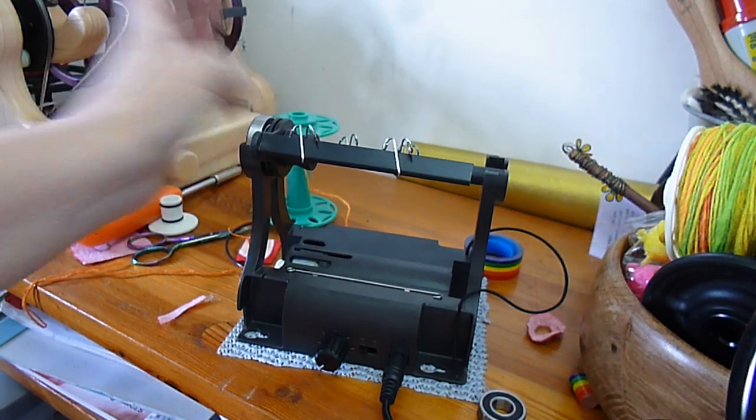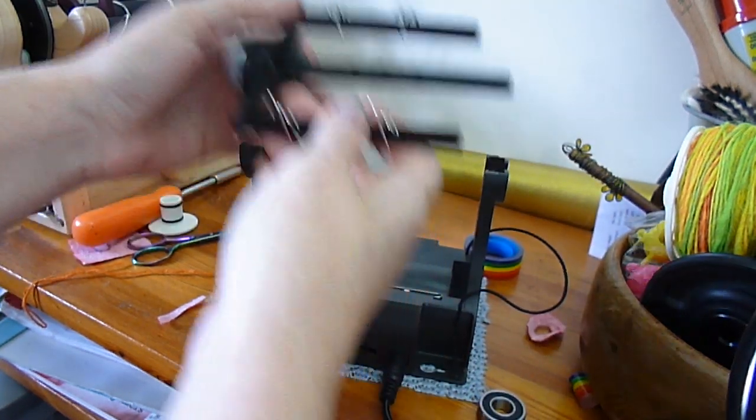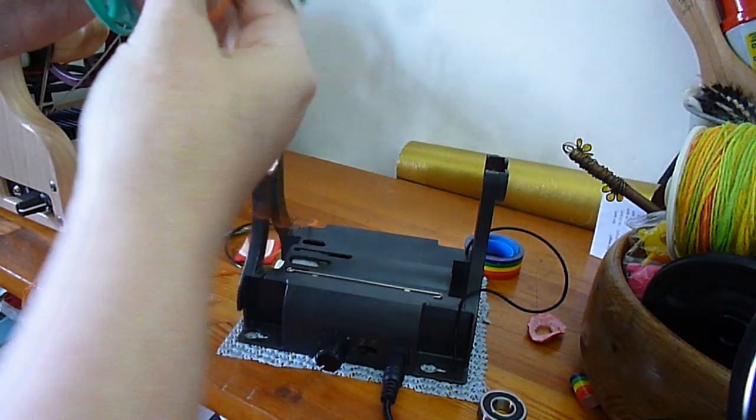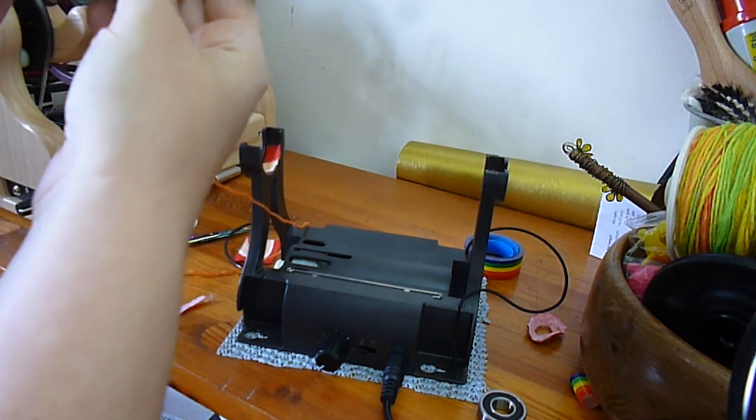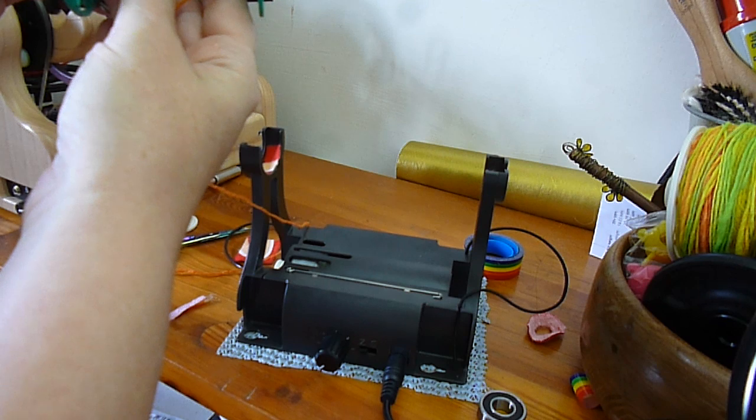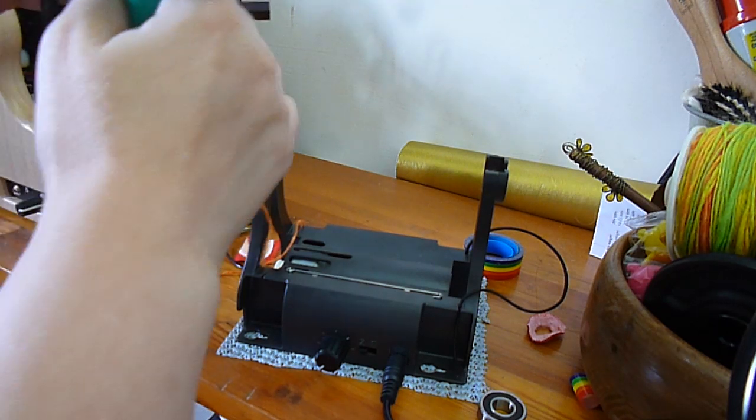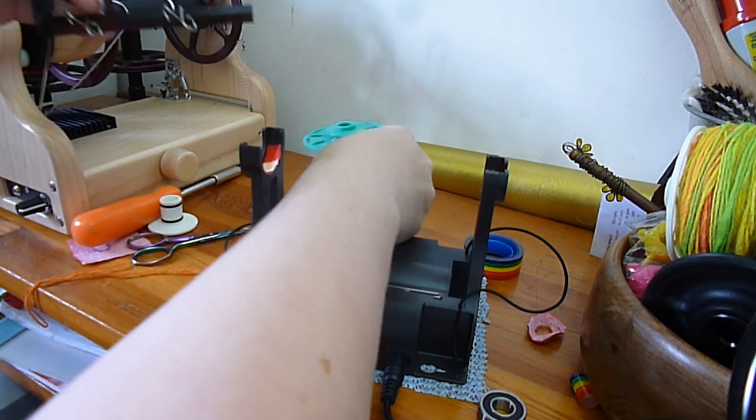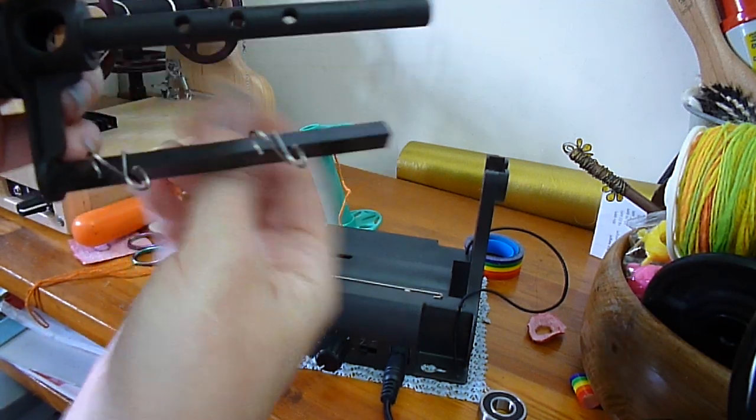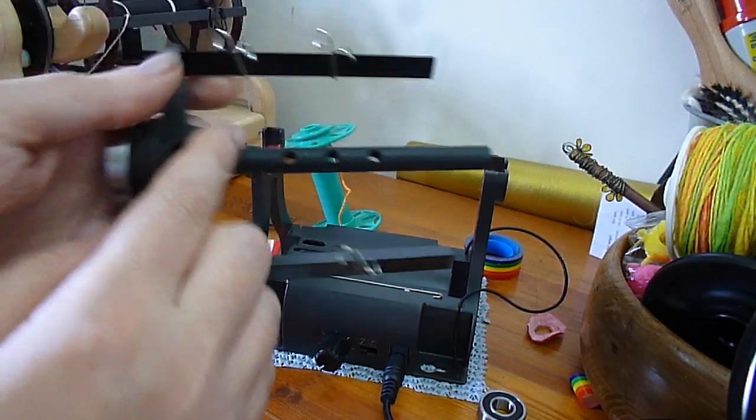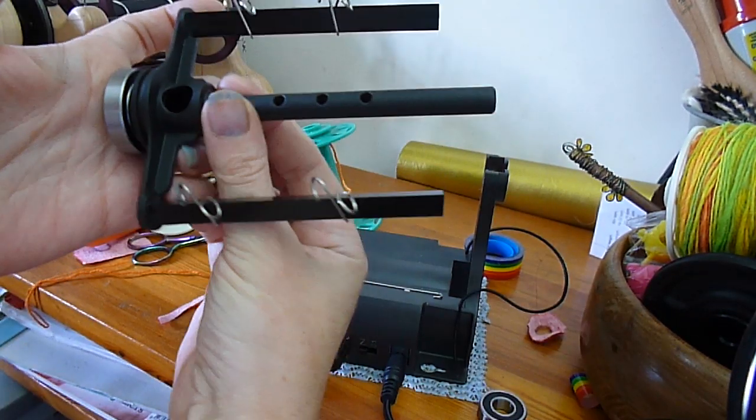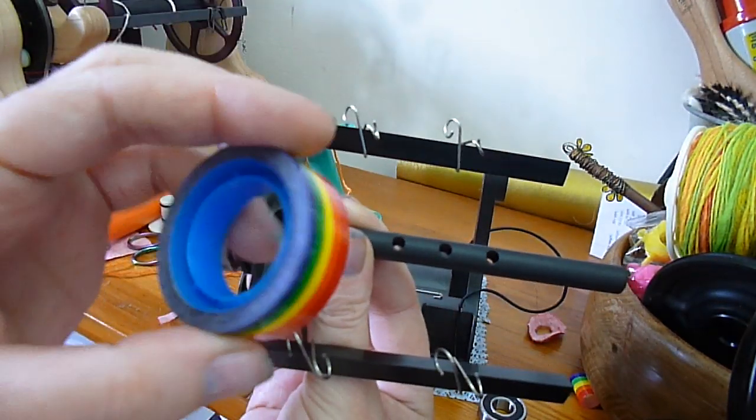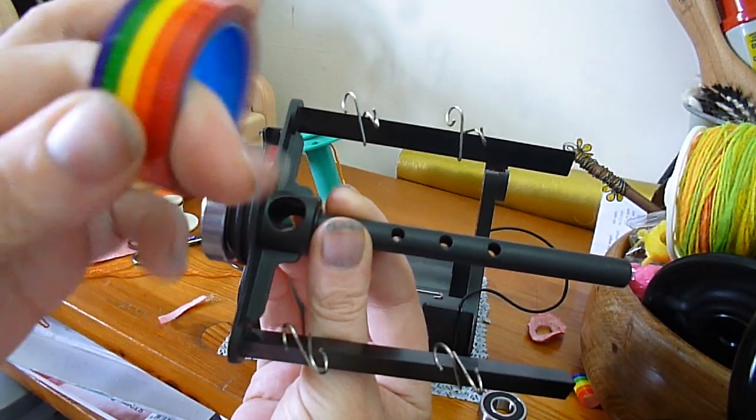Before I put the bobbin on, I'm going to deal with the flyer shaft. You can see, if I line this up, the only places the bobbin will be touching the flyer shaft is about there, about there. So, I'm going to make those places extra frictionless, smooth and shiny, by putting a little bit of this tape on. Any shiny, smooth tape will do.